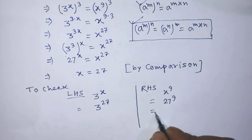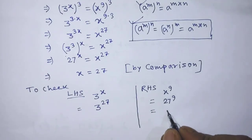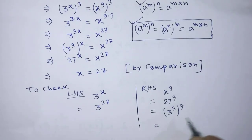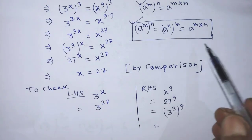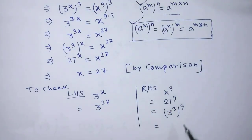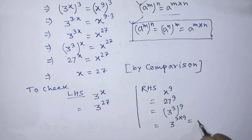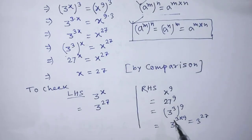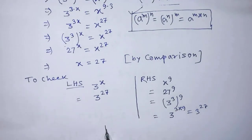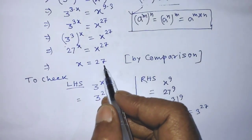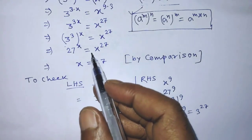Now we can write 27 to the power 9 in exponential form as 3 to the power 3, whole to the power 9. According to the formula, this becomes 3 to the power 3 times 9, that is 3 to the power 27. So it is clear that the left hand side and right hand side are both equal to 3 to the power 27, and x equal to 27 satisfies the given equation.